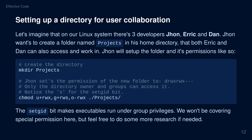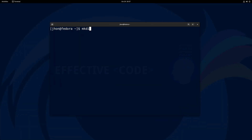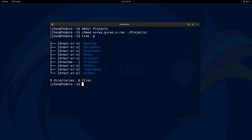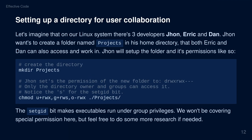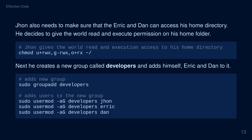Setting up a directory for user collaboration. Let's imagine that on our Linux system there are three developers: John, Eric, and Dan. John wants to create a folder named projects in his home directory that both Eric and Dan can also access and work in. John creates the projects directory and changes its permissions as follows: users have read, write, and execute permissions; groups have read and write permissions including the special permission set GID; and others or world have no permissions at all. The set GID bit makes executables run under group privileges. John also needs to make sure that Eric and Dan can access his home directory, so he gives the world read and execute permissions on his home folder.